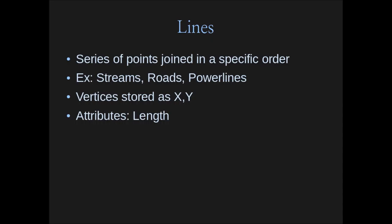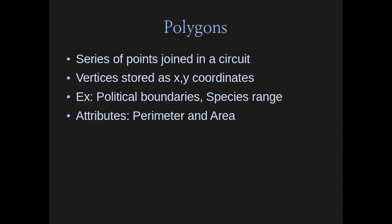We have lines — a series of points joined in some specific order. These can be things like streams, roads, power lines, borders, trails, blood vessels — anything linear can be described as line-type vector data. Vertices are stored as XY coordinates with some storage indicating the order they're joined. Lines have an additional attribute beyond location: the length of that entire line.